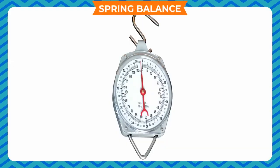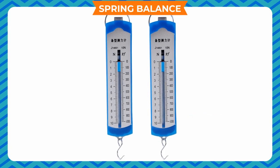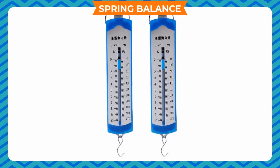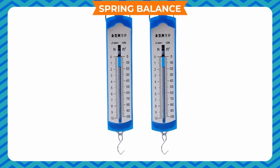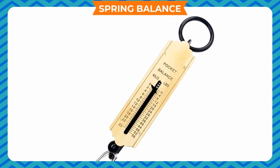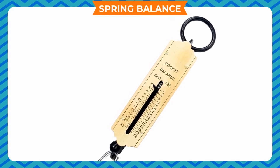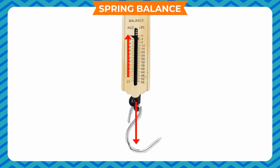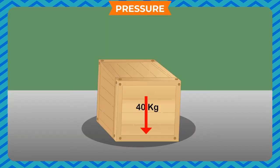Spring Balance: A spring balance is a device that measures force. It uses the principle that the greater the force, the greater is the extension it produces on a coiled spring. It consists of a coiled spring with a pointer attached. As the spring is stretched, the pointer moves on a graduated scale, and the reading gives the magnitude of the force.